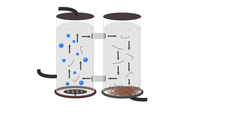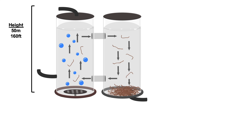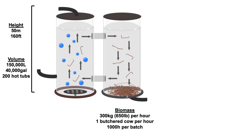All right, so now that we know what an airlift bioreactor looks like, let's have a look at corn's production facility specs. In the corn production facility this reactor is going to have two towers that are each 50 meters tall — giant giant towers. Those towers are going to house 150,000 liters of media, which is the equivalent of 200 of those family-style hot tubs. What it allows corn to do is to create 300 kilograms of biomass per hour — the equivalent of one butchered cow of biomass every single hour.